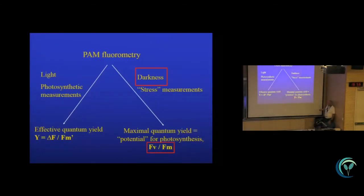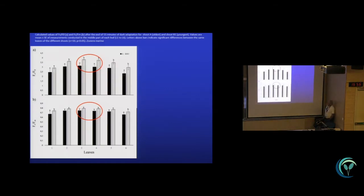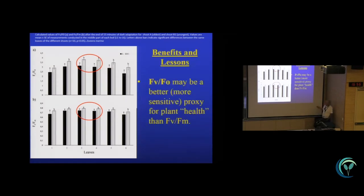The very last thing I want to point out here is recent suggestions that this Fv over Fm value for maximum quantum yield, like measuring any stress that has nothing to do with light, because you do it in darkness, may not be the best way to express stress in seagrasses. This is work that came out of Mats' lab, where you can see that the difference in Fv over Fm here in a young versus an old leaf is very small, but if you instead measure Fv over F0, you get a much more sensitive way to measure stress. We can discuss this in the workshop. My conclusion here is that Fv over F0 may be a better or more sensitive proxy for plant health than Fv over Fm.